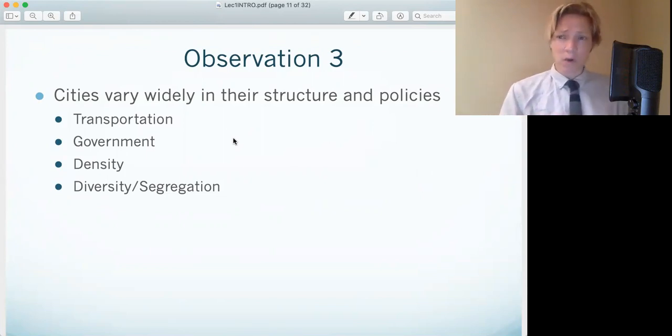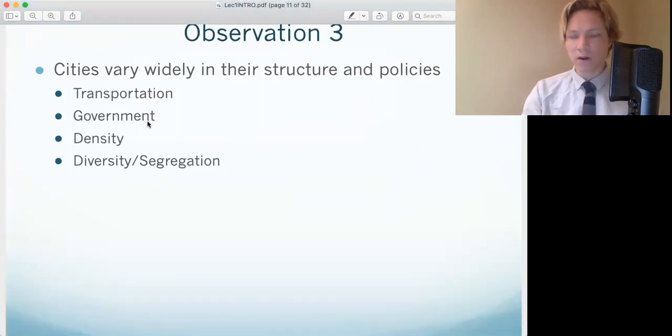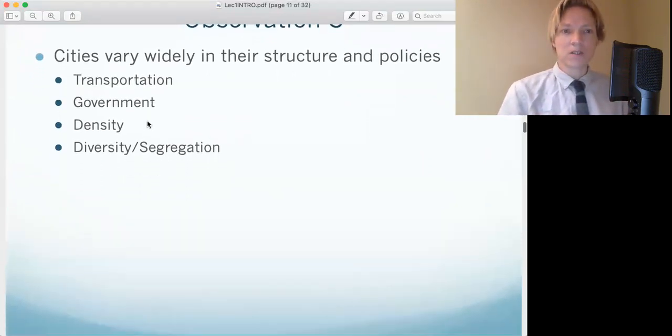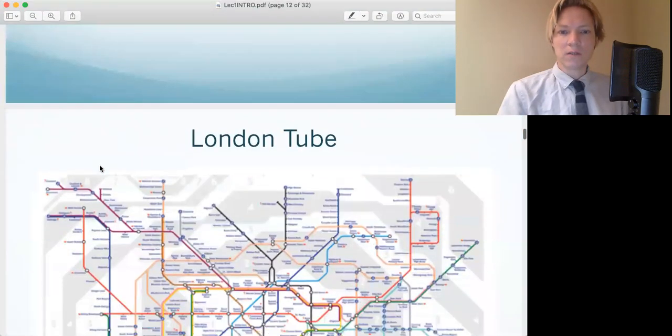How the government is organized. So some cities have one city government. Some city areas are broken into separate ones. So that differs from city to city. Density. So how closely packed a city is. And then how diverse it is and how segregated it is also varies city to city. And so again, we're going to discuss the effects of these and also the origins of these huge differences.